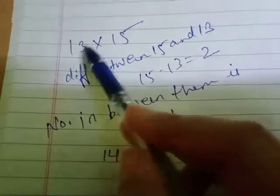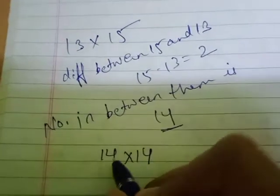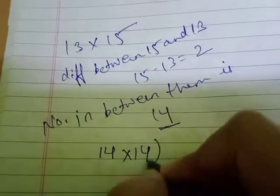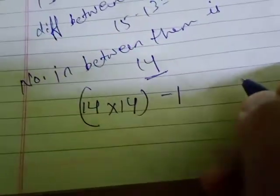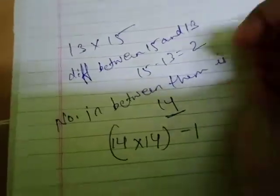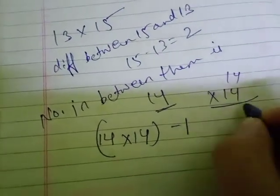Multiply it by itself, then subtract 1 from it. So in rough work, you can multiply 14 times 14.